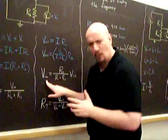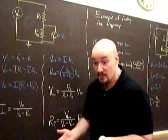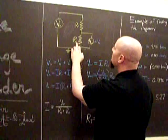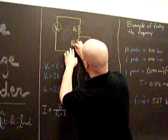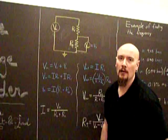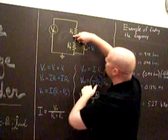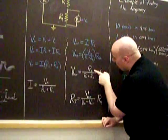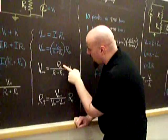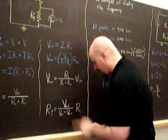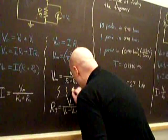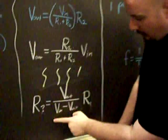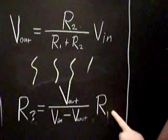Now suppose we weren't looking for V-out, but instead for some sort of mysterious resistance. Suppose we didn't know R2 — that would be our question mark — and we knew R1, V-in, and V-out. We could take this equation, replace R2 with R-question-mark, and then use algebra to solve for it: the ratio of V-out over V-in minus V-out, times the R we know.